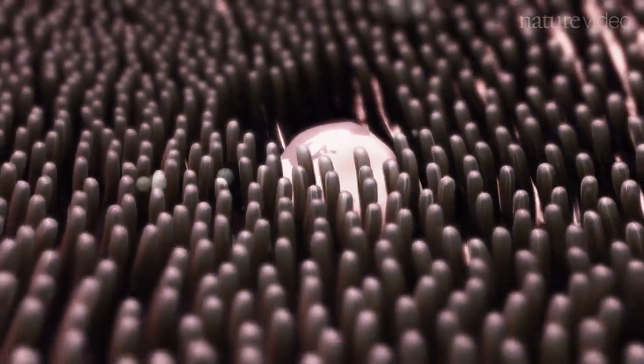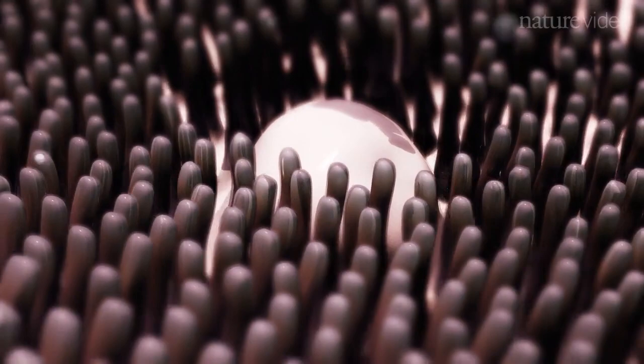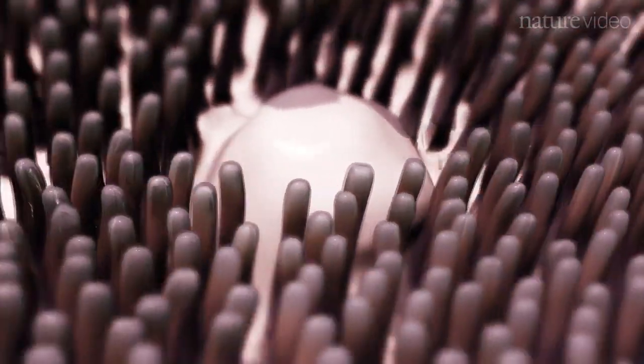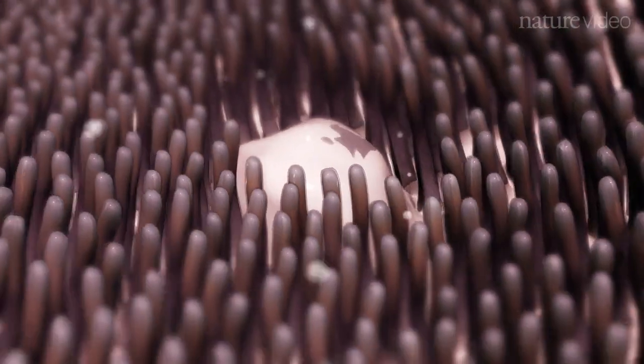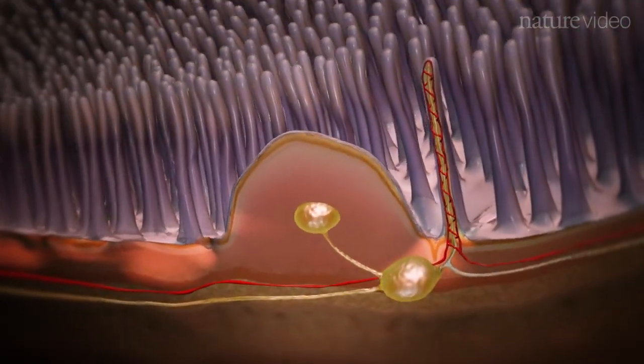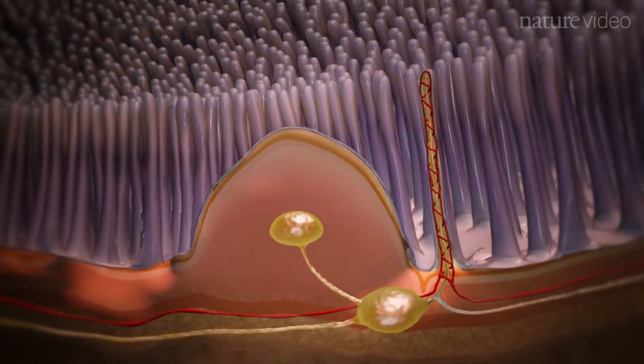Scattered along the intestinal mucosa are dome-like structures called Peyer's patches. These are enriched in lymphoid tissue, making them key sites for coordinating immune responses to pathogens whilst promoting tolerance to harmless microbes and food.